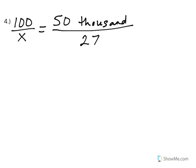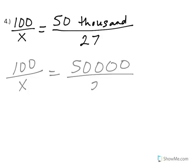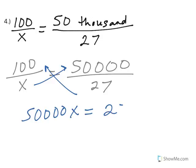In number 4, when I see 50 thousand, I'm going to rewrite that as 50,000 because I think that might be easier. And then when I cross multiply, I get 50,000x equals 2,700.